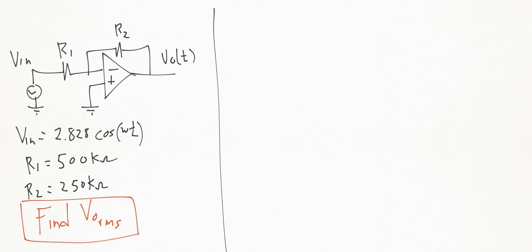Here we have a simple topology with an input voltage of 2.828 cosine omega t. So now we're dealing with time variant signals here. We're not given any information on what omega is,